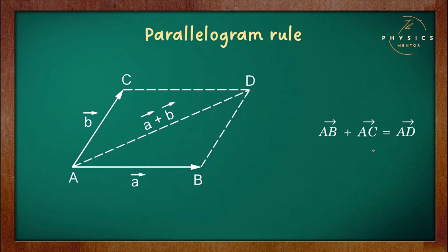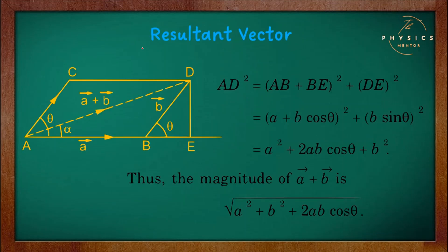After adding vector A and vector B, the result is a new vector, also known as the resultant vector. Since it is a vector, it has both magnitude and direction. Now let us calculate the magnitude of the resultant vector.